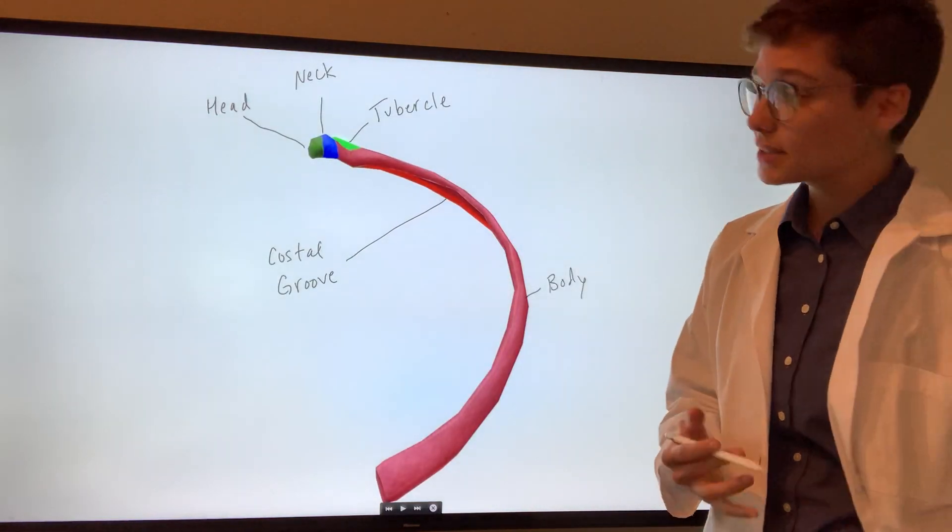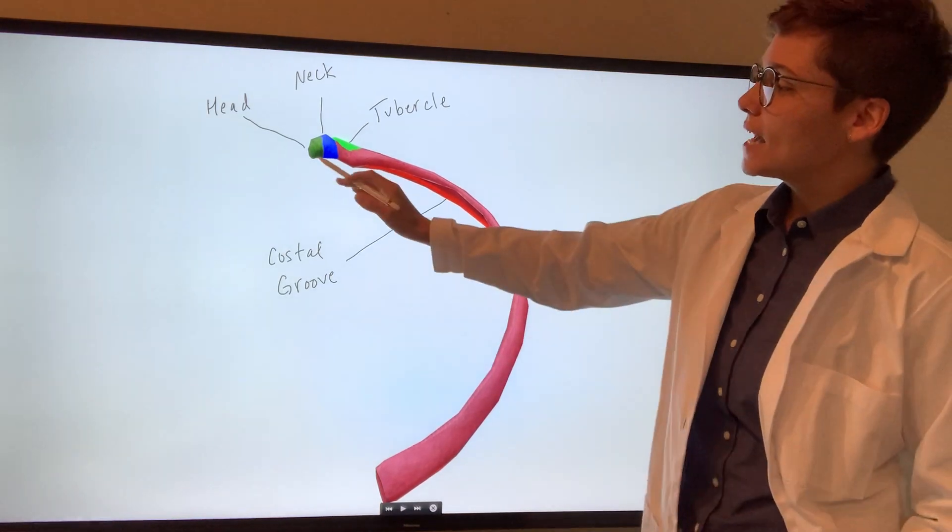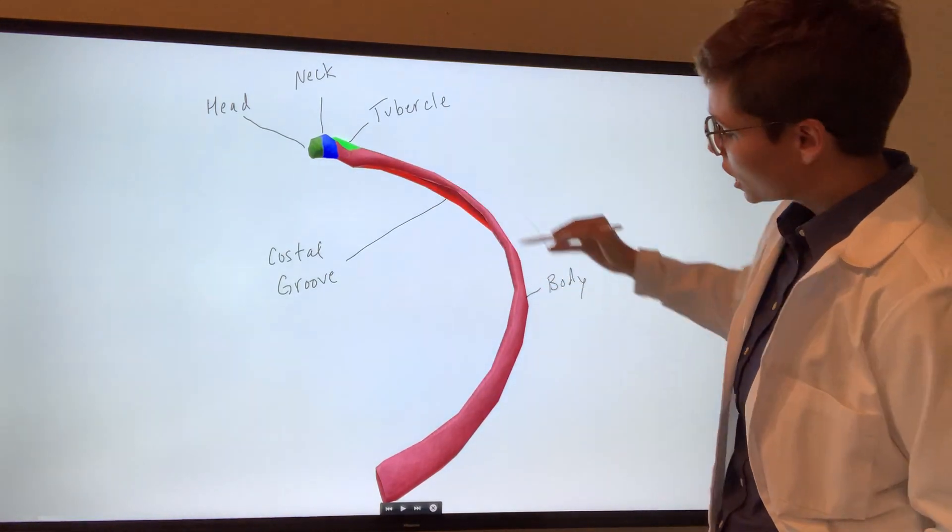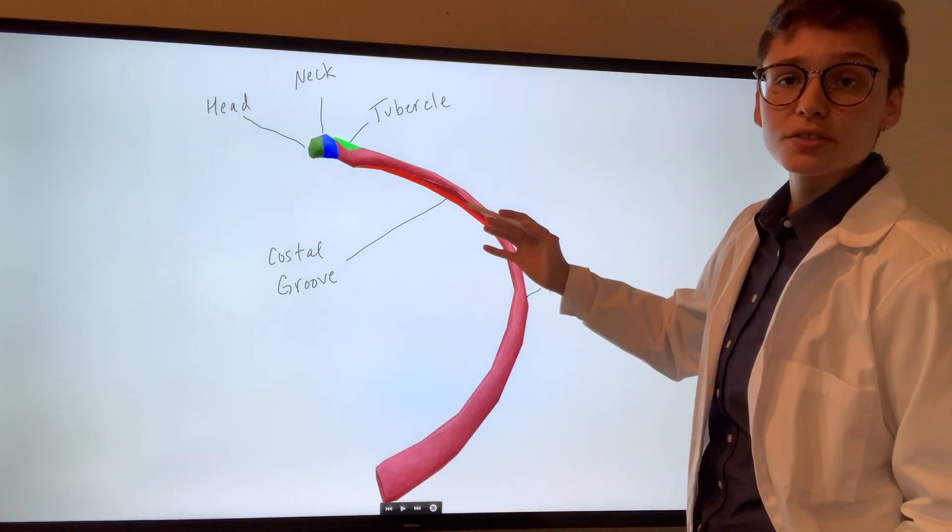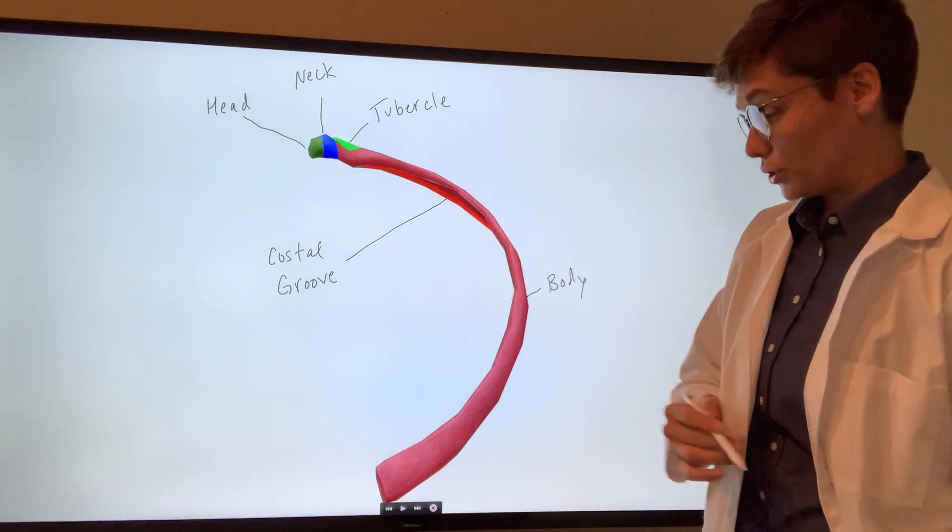There are several ways to classify ribs. A typical rib has a head, neck, tubercle, a long carved body, and then on the inferior edge there's a costal groove that houses the intercostal artery, vein, and nerve.